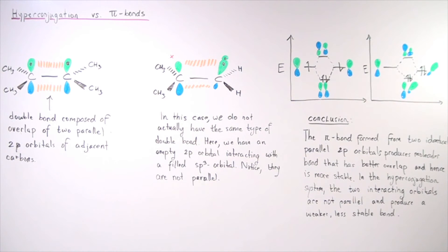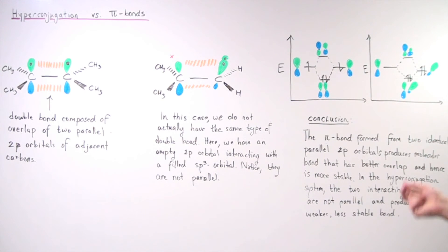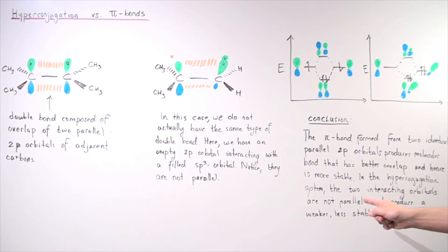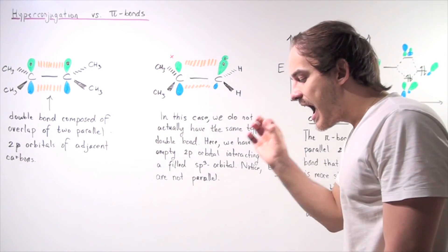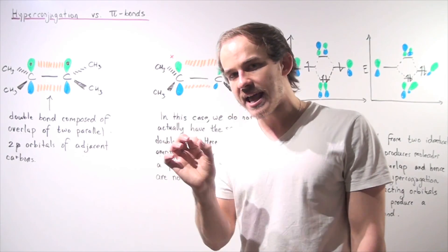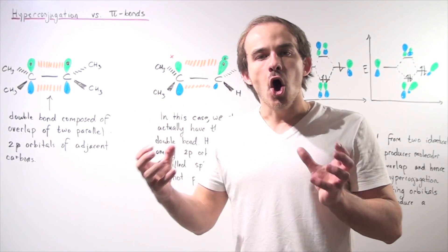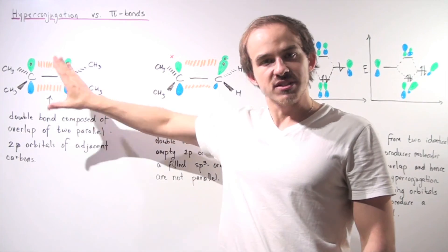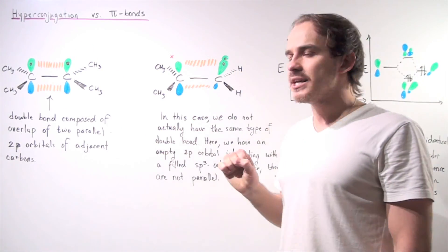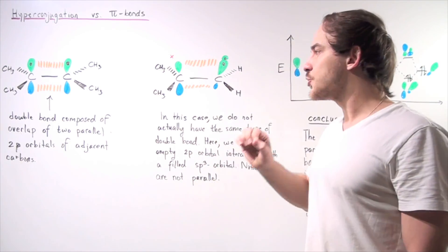In conclusion, the pi bond formed from two identical parallel 2p orbitals produces a molecular bond with better overlap and is therefore more stable. In the hyperconjugation system, the two interacting orbitals are not parallel, producing a weaker, less stable bond. Hyperconjugated bonds are not exactly the same as the pi bonds found in double bonds — they involve a different type of interaction with less stabilizing overlap.